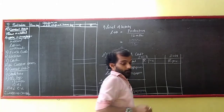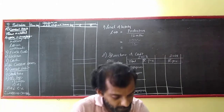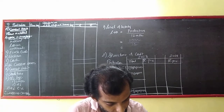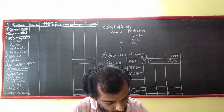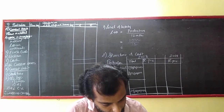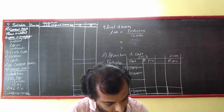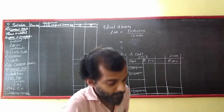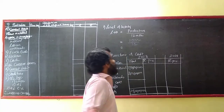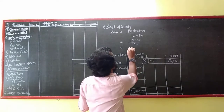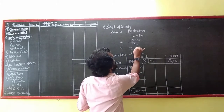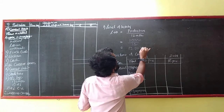15,000 divided by 12 — that means my level of activity will be 1,250 per month.